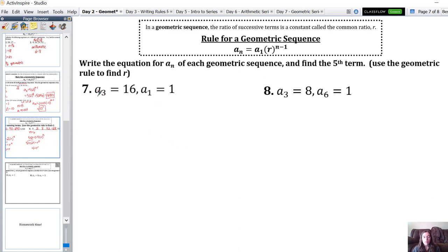The last term that I know about is this a sub 3. I'm going to use that number equal to my first term, which is 1, times r to the power of, and then we have 1, 2, 3 to get from a sub 1 to a sub 3, and 3 minus 1 is 2. So now we have 16 equal to r squared, which means our value of r is 4.